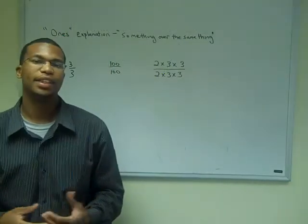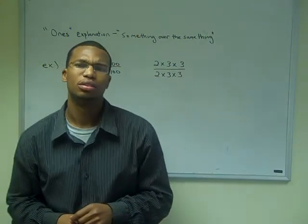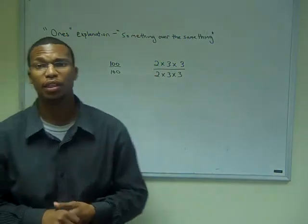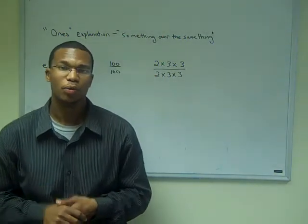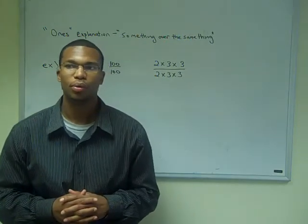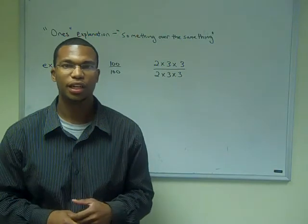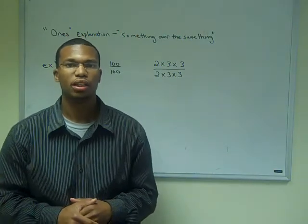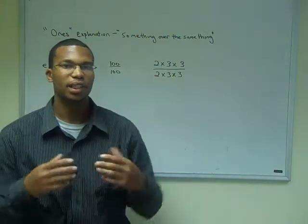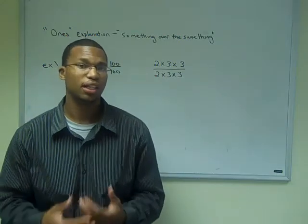To conquer the second step, you must understand what I mean by the term "ones." Ones is defined as something over the same thing. Why is this 1? Let's go to the pizza example. If I had 10 slices of pizza and I took 10 of them, then I took 1 whole pizza. So the concept of 1 utilizes taking some quantity over the same quantity, and that will constitute a 1.